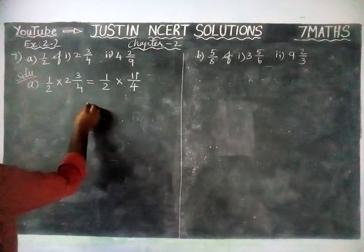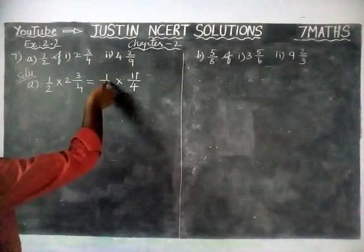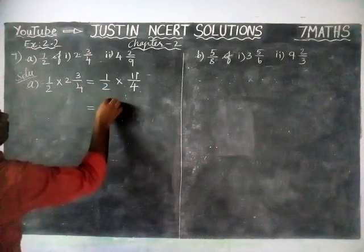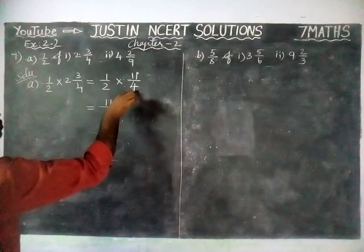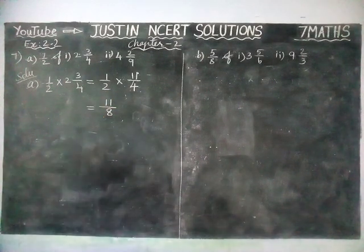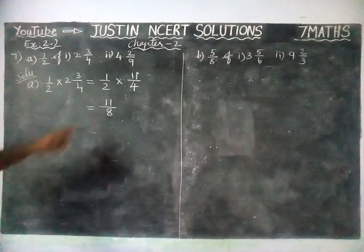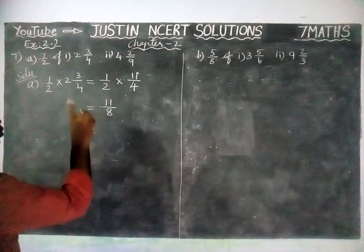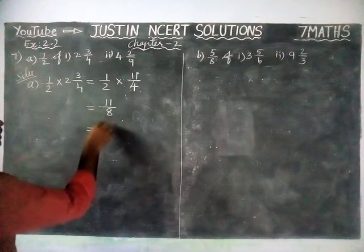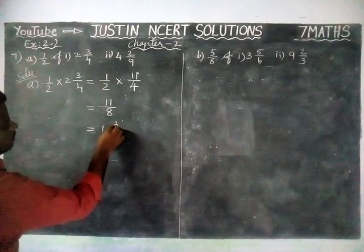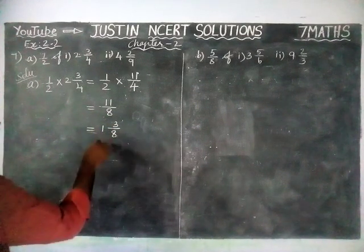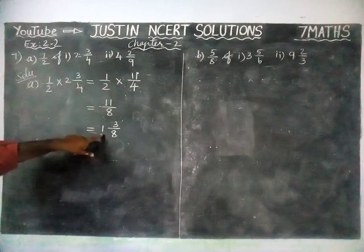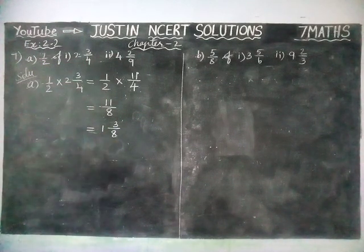Now, if it is possible to simplify, we can simplify; otherwise we have to multiply and write it as it is. 1 times 11 is 11, divided by 2 times 4 which is 8, giving us 11/8. This is an improper fraction, so we convert it into a mixed fraction. In 11, we have one 8, and 11 minus 8 equals 3. So the answer is 1¾ — that is, 1 and 3/8. So 1/2 of 2¾ is equal to 1 3/8.